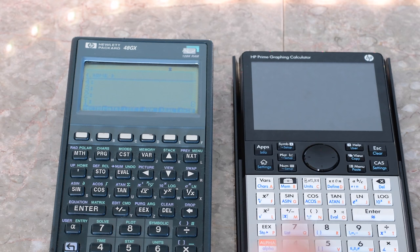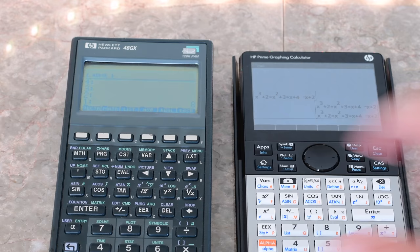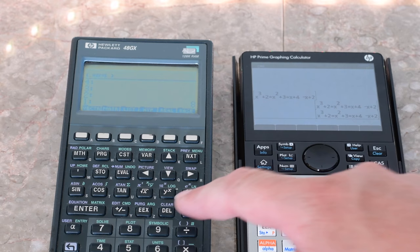The first thing you'll notice on powering these up is that the Prime, of course, has a nice color screen, and it's backlit, so it'll probably go through batteries faster. In fact, my HP 48 is on the same set of AAAs, I think, going on two or three years.